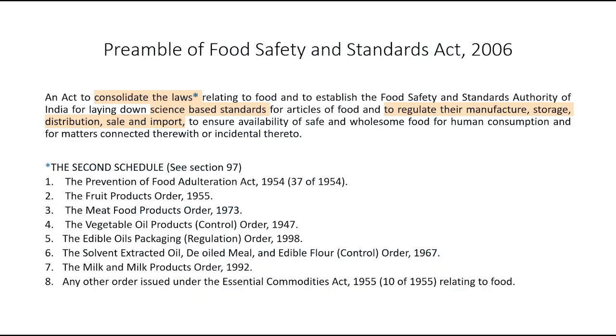This Act is relatively new and it has integrated the earlier existing laws pertaining to all rules and regulations regarding food items. Before we start the Act, it is important to refer to the preamble of the FSS Act 2006. It is an act to consolidate the laws relating to food and to establish the Food Safety and Standards Authority of India for laying down science-based standards for articles of food and to regulate their manufacture, storage, distribution, sale and import to ensure availability of safe and wholesome food for human consumption.